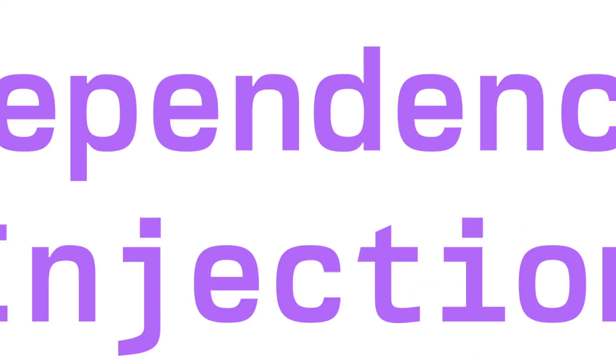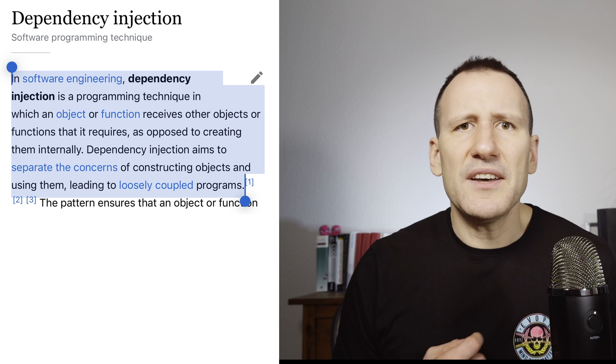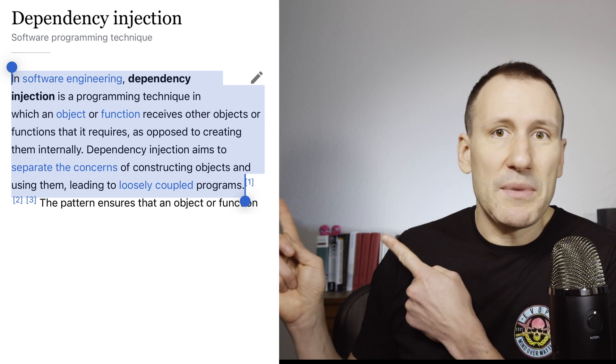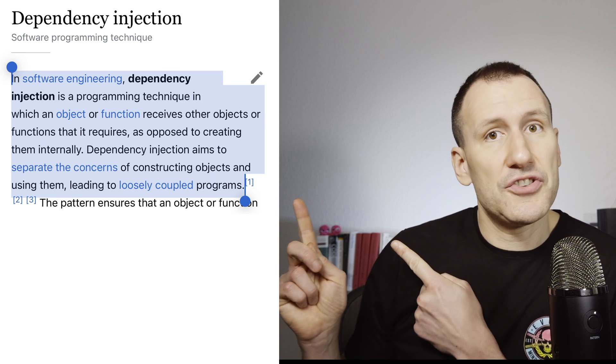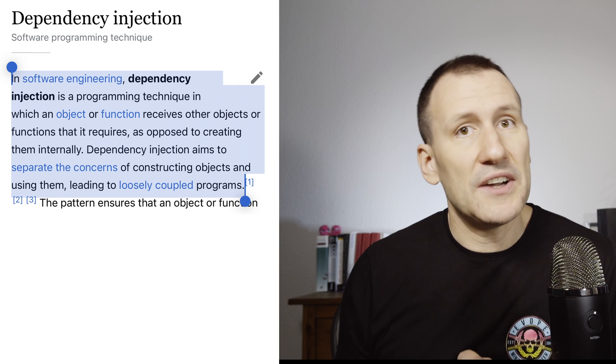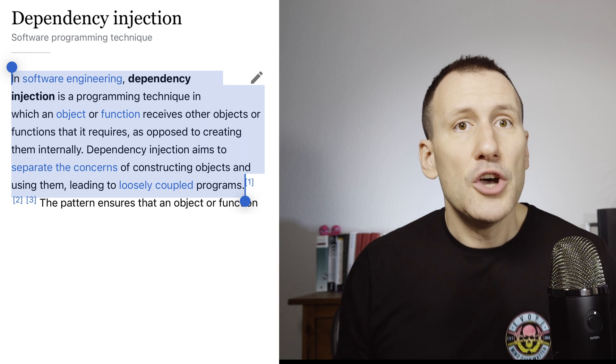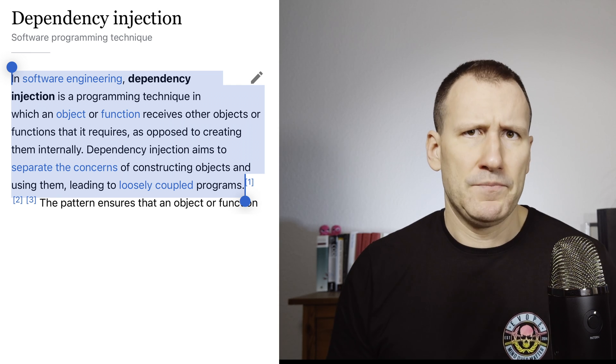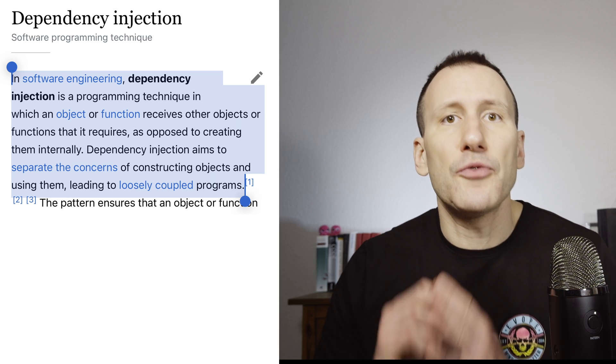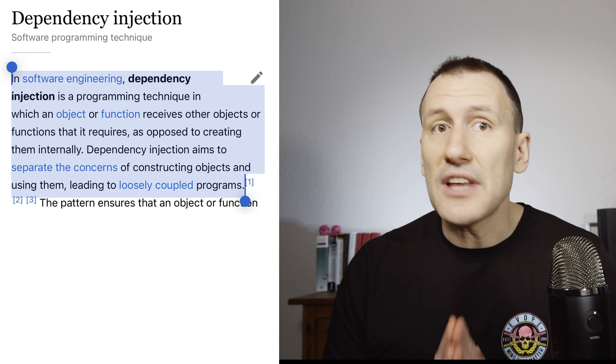So let's talk dependency injection. And Wikipedia defines it as a programming technique in which an object or function receives other objects or functions that it requires as opposed to creating them internally. Dependency injection aims to separate concerns of constructing objects and using them leading to loosely coupled programs. That's what we want. And if it's so simple, what is the reason for the fear and loathing around these ostensibly simple concepts?